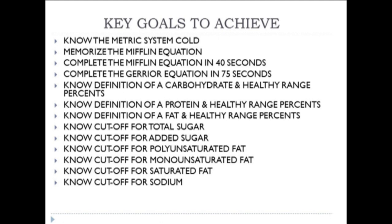Create a cheat sheet for the Gehrer equation and then practice it — not by writing out the equation extensively, but by visualizing it from your cheat sheet and putting in the values as indicated. Practice getting that done in about 75 seconds. If you're able to do both the Mifflin and Gehrer equations to that extent, you will do really well — B+, A−, and A in this class.